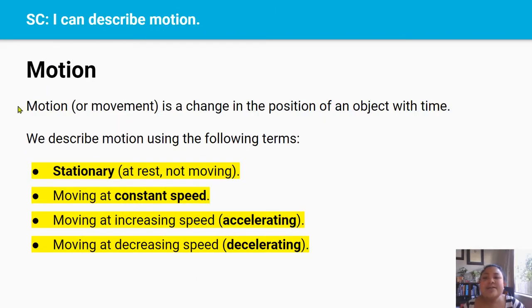So what is motion? Motion or movement is a change in the position of an object with time. So let's say that I'm here and then after some seconds past, I'm now here. I've moved from here to here.